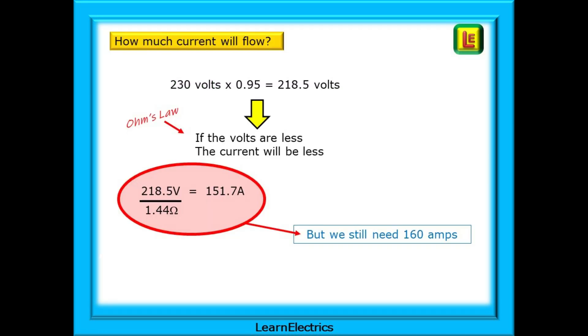The next question is if the voltage is dropped then by how much has the current dropped? Taking our 230 volts nominal voltage and multiplying by 0.95 we get 218.5 volts as the low figure. If the volts are less the current will be less. 218.5 volts divided by 1.44 ohms is just 151.7 amps. Not close enough to the 160 amps that we need. We're not going to meet the requirements for disconnection times. We need to do more.